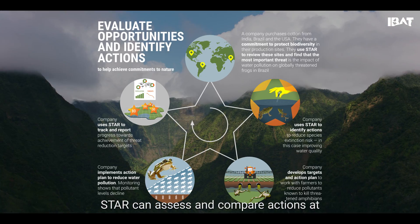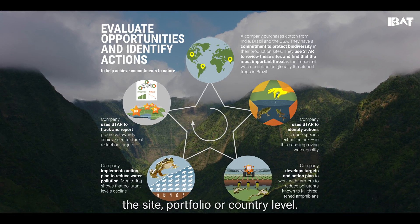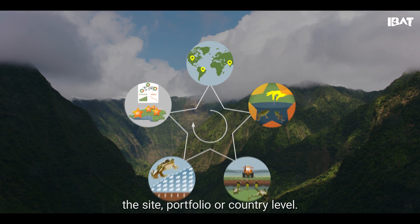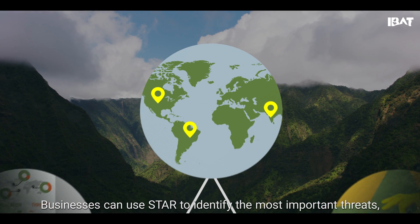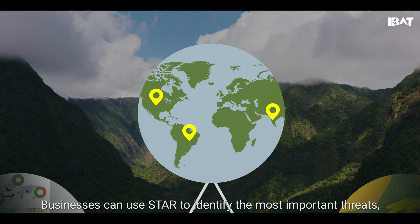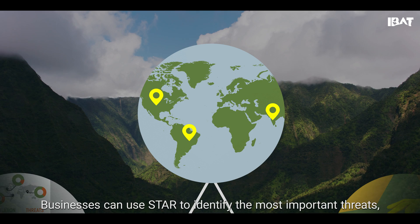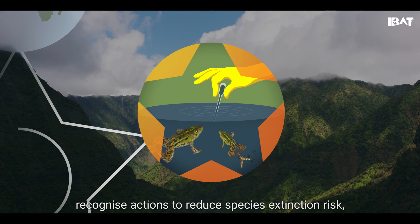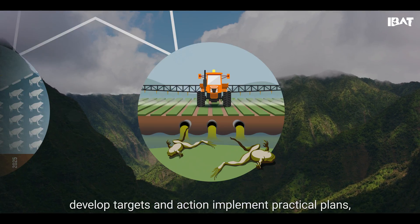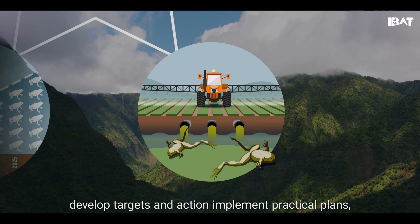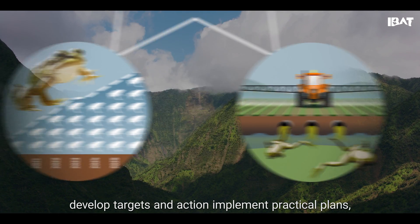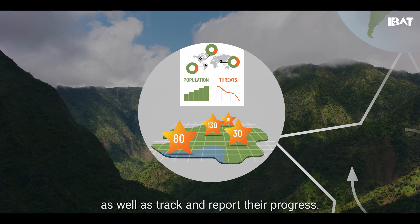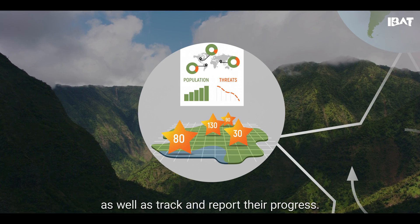STAR can assess and compare actions at the site, portfolio, or country level. Businesses can use STAR to identify the most important threats, recognize actions to reduce species extinction risk, develop targets, and implement practical plans and actions, as well as track and report their progress.